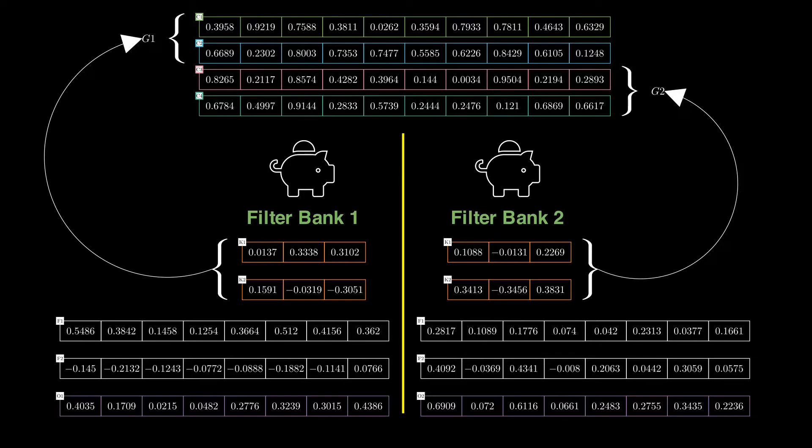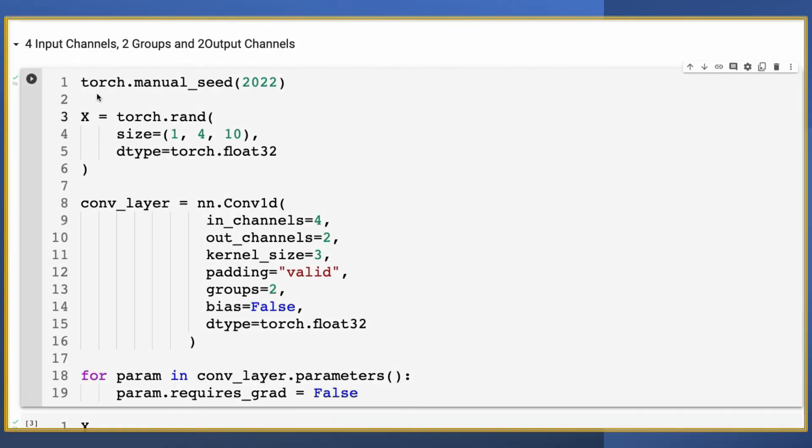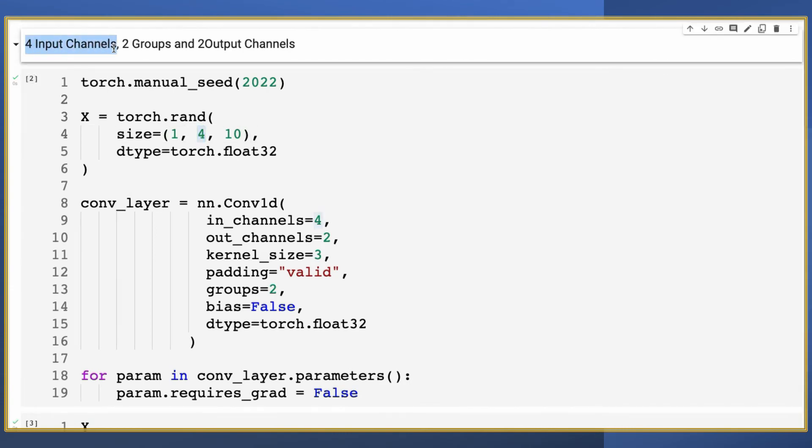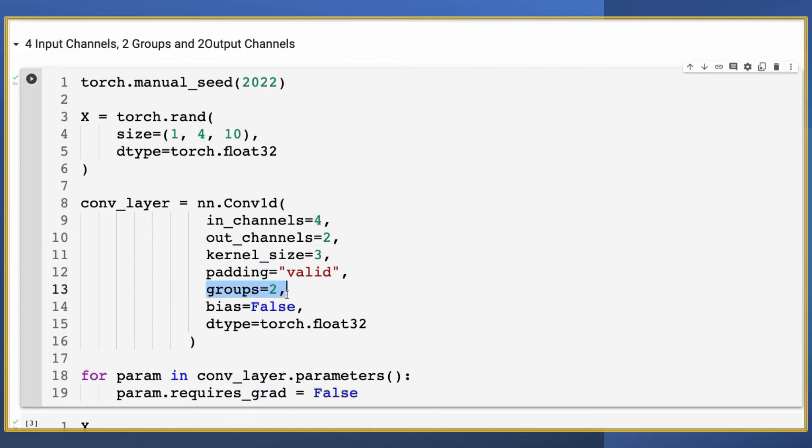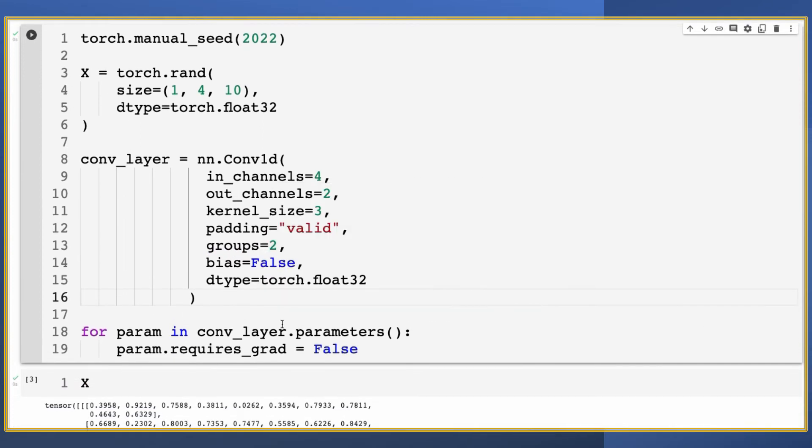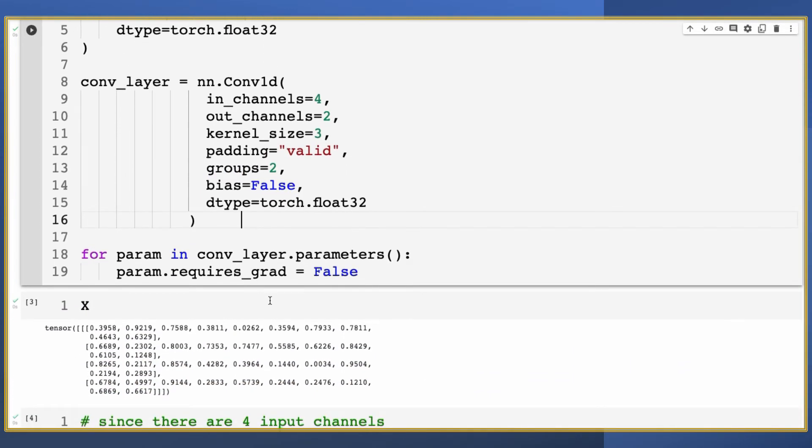Let's look at the code using which we can validate our understanding. We will be using four input channels, two groups and two output channels. The number of groups is specified in the convolution layer like this. And recall that from the last tutorial that out_channels argument in the convolutional layer conv1D or conv2D will control the number of filter banks. Here we have two out channels, which means that we will have two filter banks.